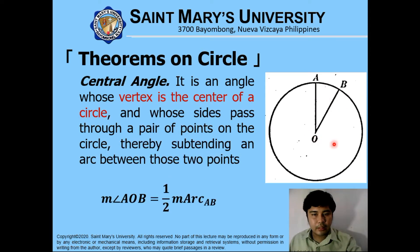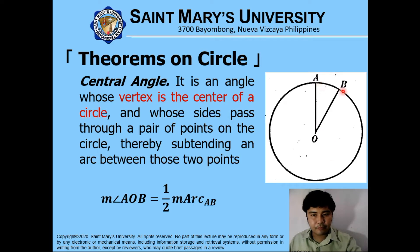A central angle is an angle whose vertex is at the center, at point O, and whose sides pass through a pair of points on the circle, thereby subtending an arc between those two points. The measurement of this angle is equivalent to one half the measurement of this arc length, given by the formula.